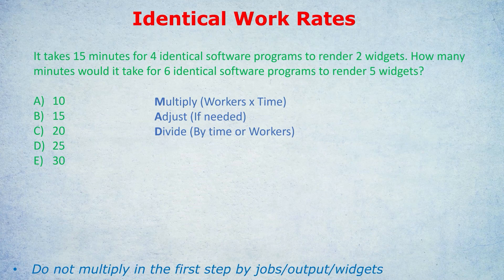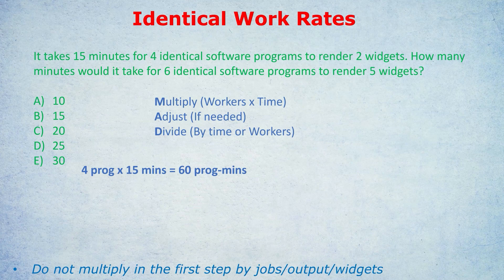Step one is multiply — the workers by the time. Don't get the two involved because that's the task we're achieving. Step one is only the workers (programs or machines) times the time. In this case, four programs times 15 minutes. The two was what they achieved — that's the task, that's what we'll label for step two. Step one is simply workers times time. Four times 15 is 60 — so 60 program minutes.